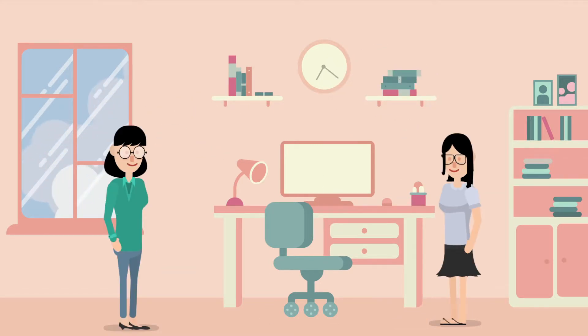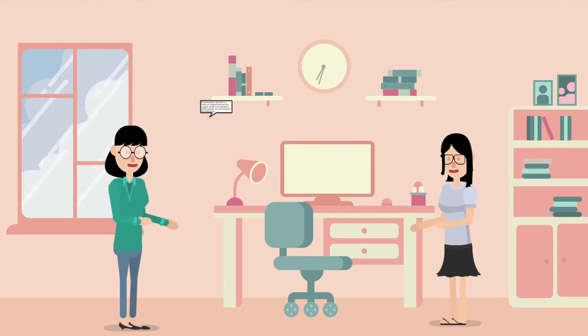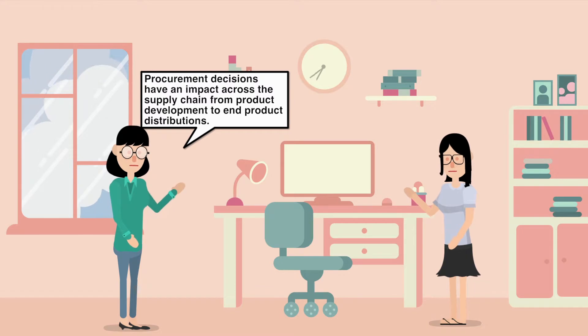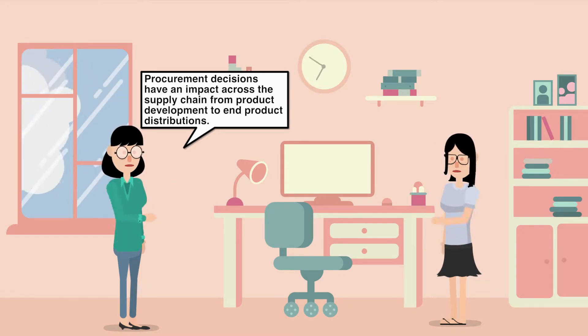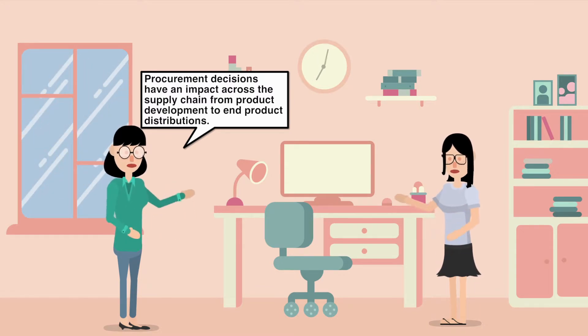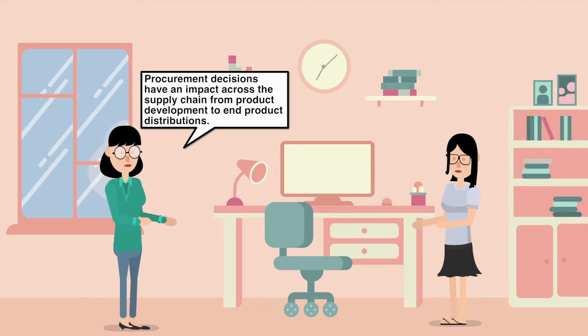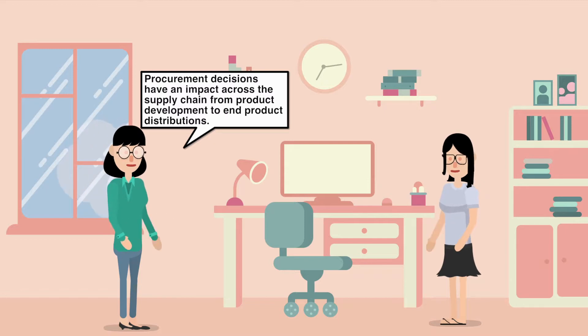We also look at how materials are converted into finished goods through manufacturing, and how finished goods are transported and distributed to consumers through outbound logistics. This helps us understand that procurement decisions have an impact across the entire supply chain, from product development to product distribution.